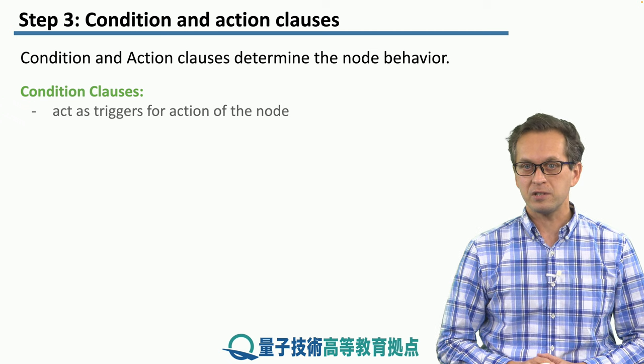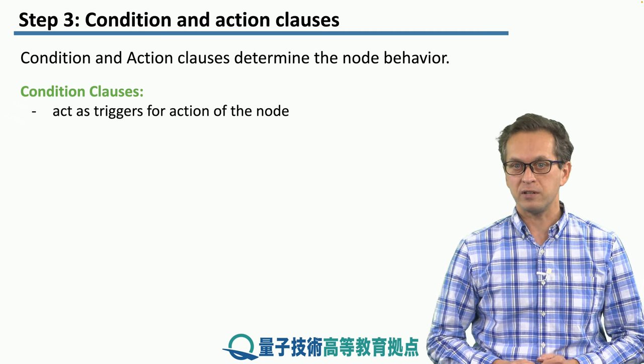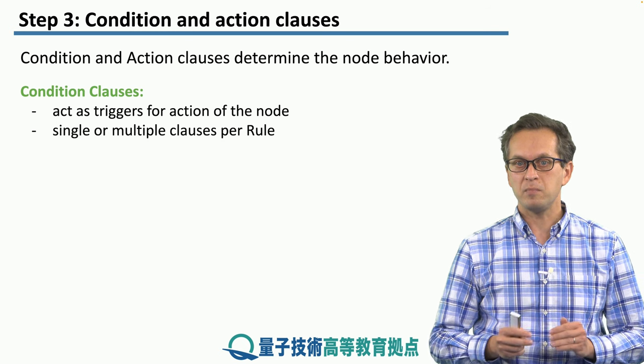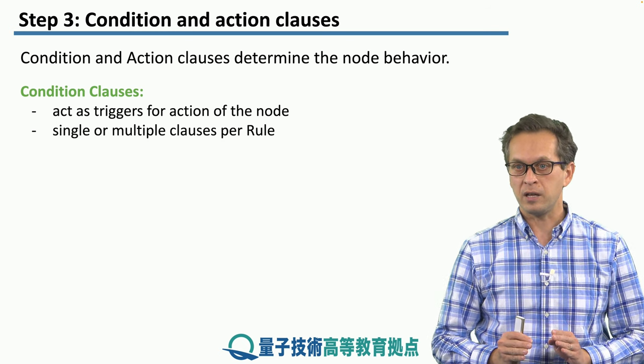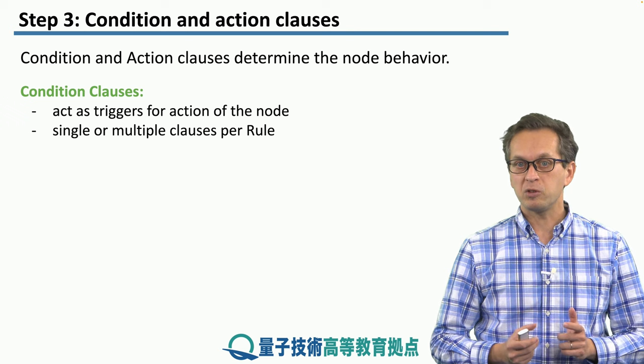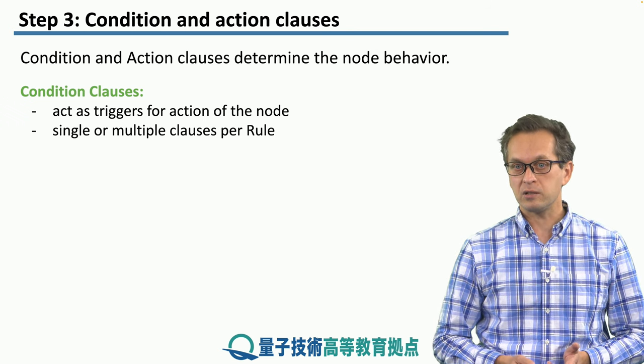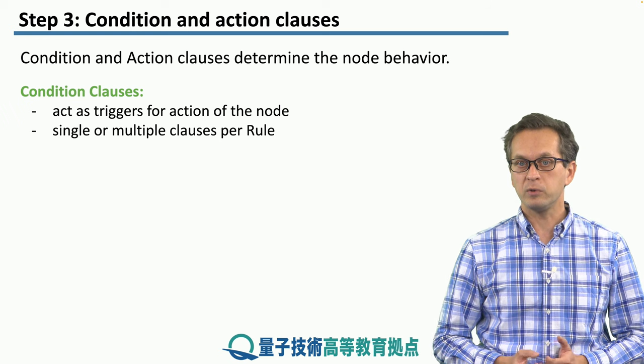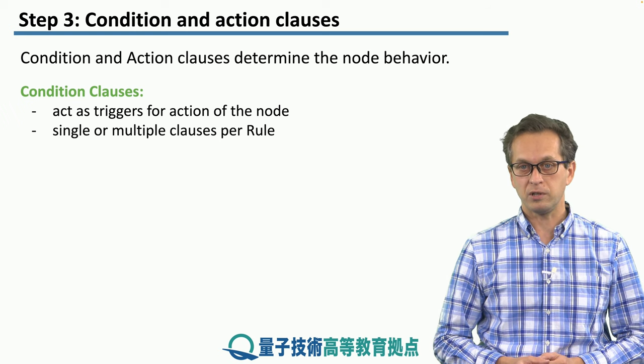Condition clauses act as triggers for the action clauses of the node. They are the ones that make the node do the actions at the appropriate time. They could be very simple. There could be a single clause per rule, or in more complicated cases, there could be multiple condition clauses per rule.